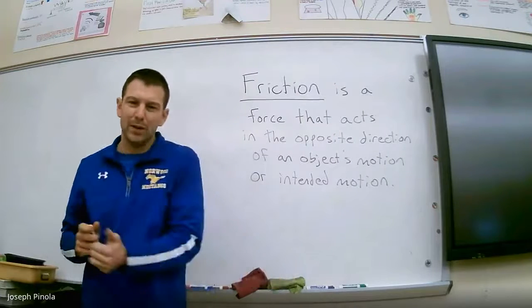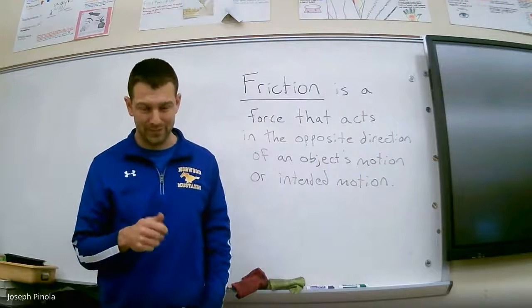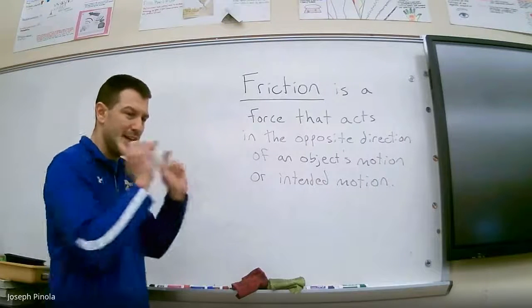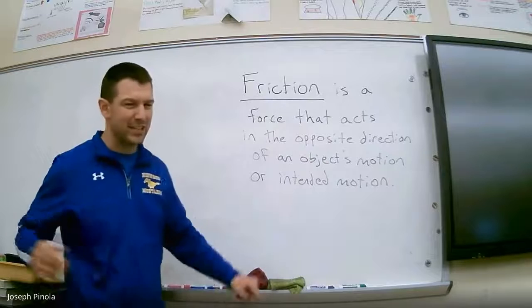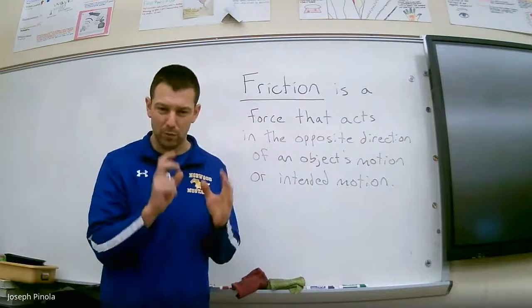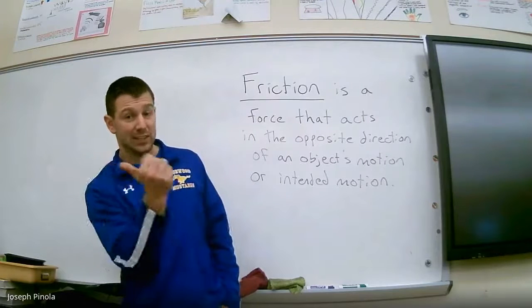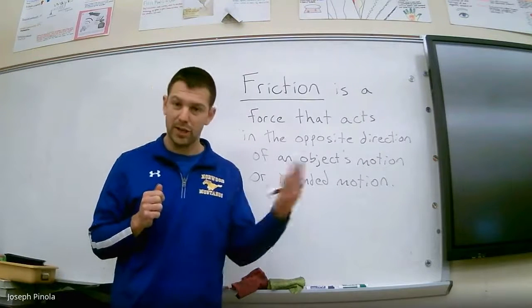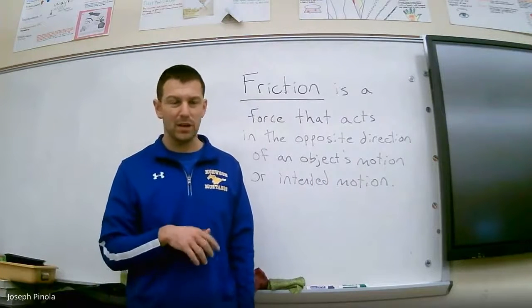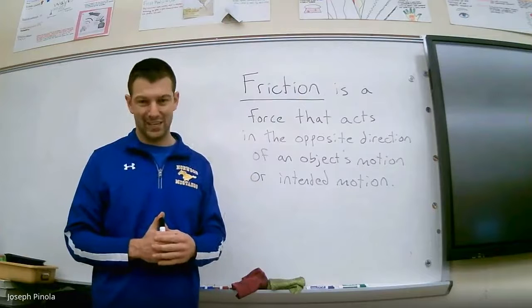Or intended motion—if an object is trying to move one way, friction acts the other way on it. In the example you saw earlier, the fridge was trying to move in the direction I was pulling it; that was its direction of intended motion. But friction was keeping the fridge in place because it was acting against the fridge's intended motion. Friction is the name for any force that acts in the opposite direction of an object's motion or intended motion.